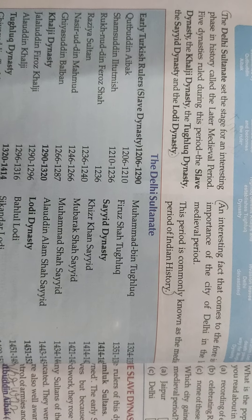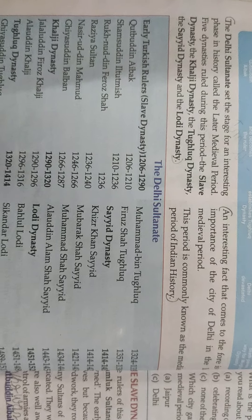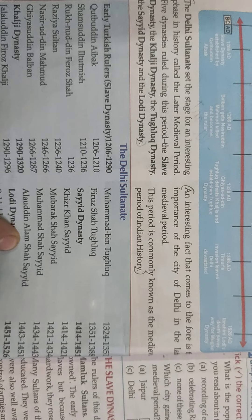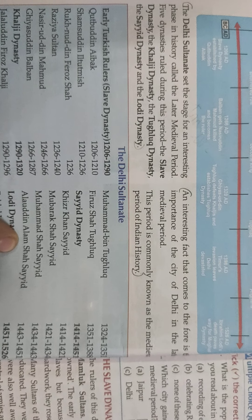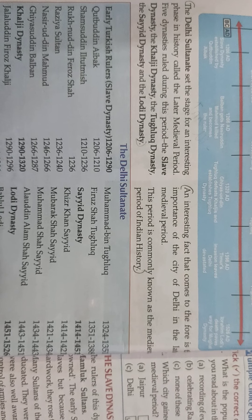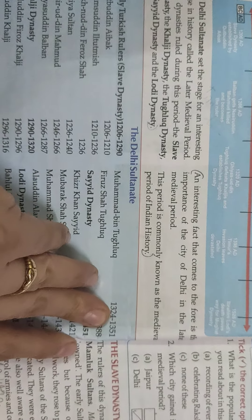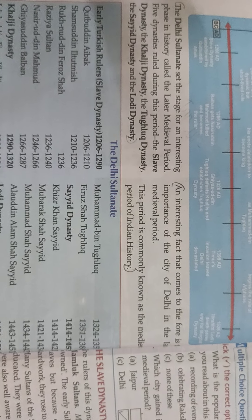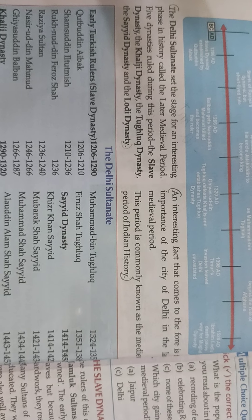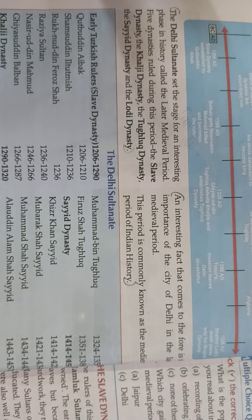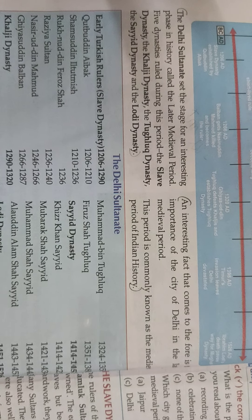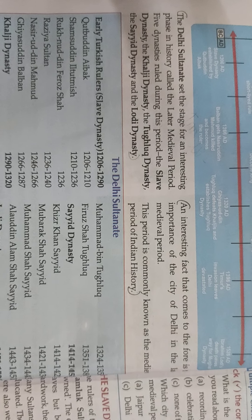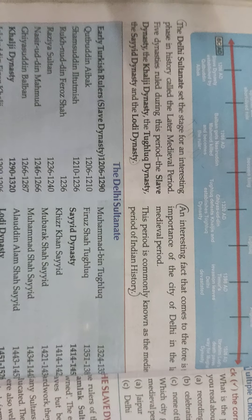An interesting fact is the importance of the city of Delhi in the later medieval period. This period is commonly known as the medieval period of Indian history, and Delhi was regarded as the most important city. The later medieval period was so significant that it is named after Delhi in Indian history.